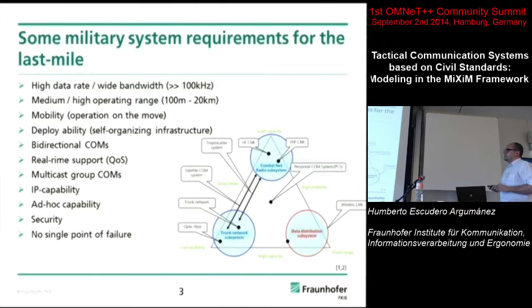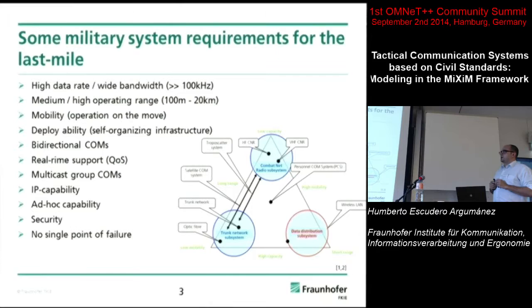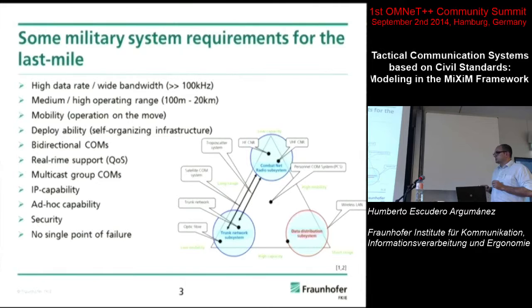One of the key requirements is a self-organizing infrastructure — the network must be smart. We need bi-directional communication systems that support real-time and multicast groups. We also want IP capabilities, because with the narrowband waveform and IPv6 it's completely impossible. It has to have ad hoc capacity, mainly because we cannot face any single point of failure — unlike a centralized mobile network with a BTS that, if it goes down, leaves no network.